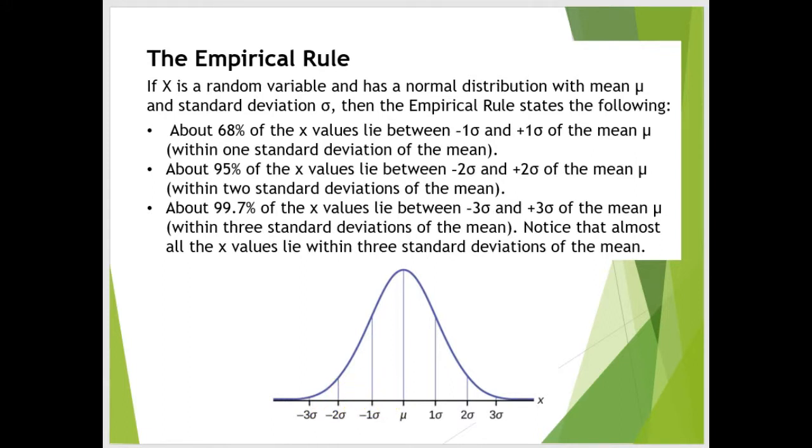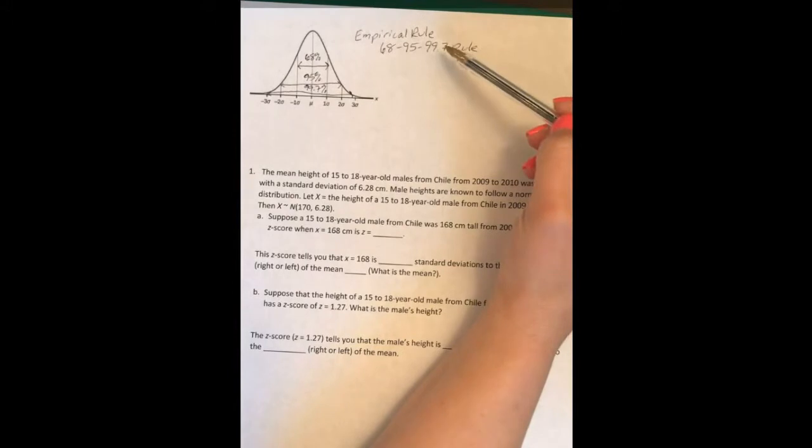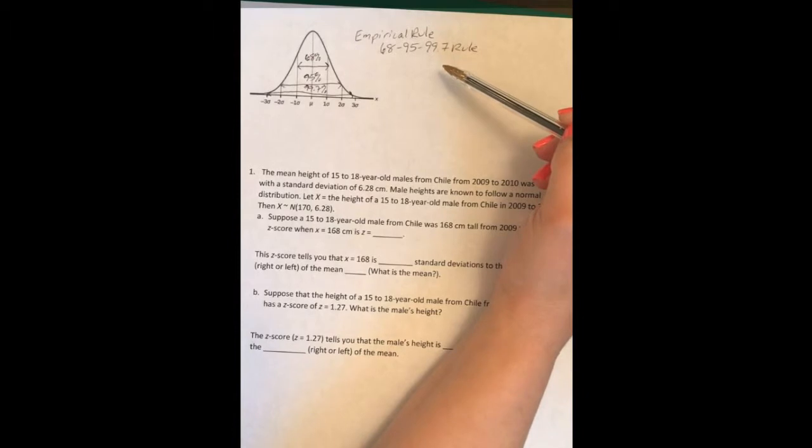So let's take a look at some examples. We're going to do some examples with the empirical rule. It's also sometimes called the 68-95-99.7 rule, so just be aware of that.